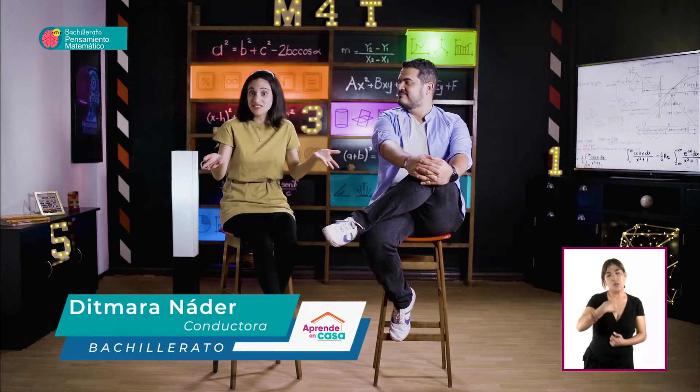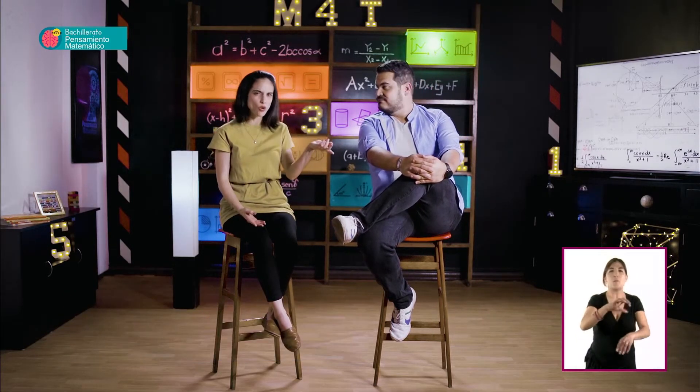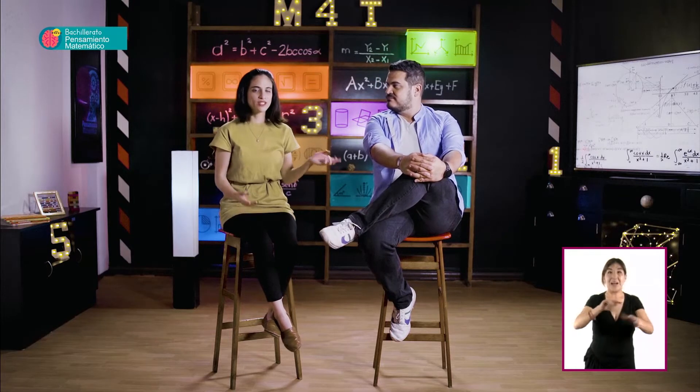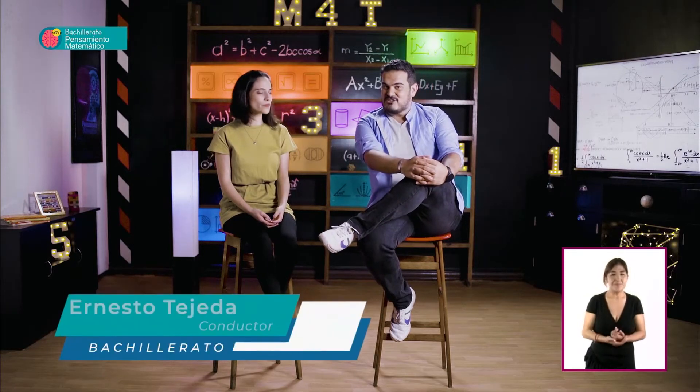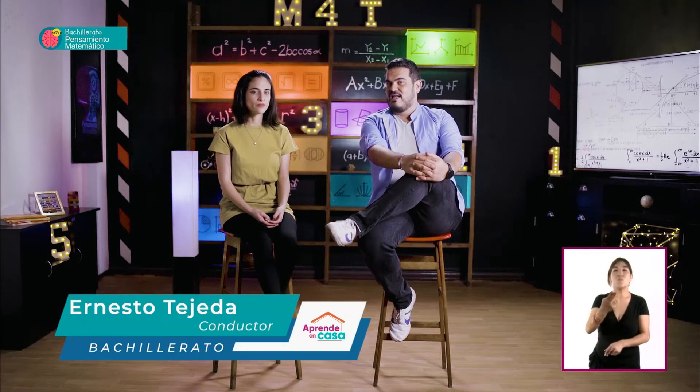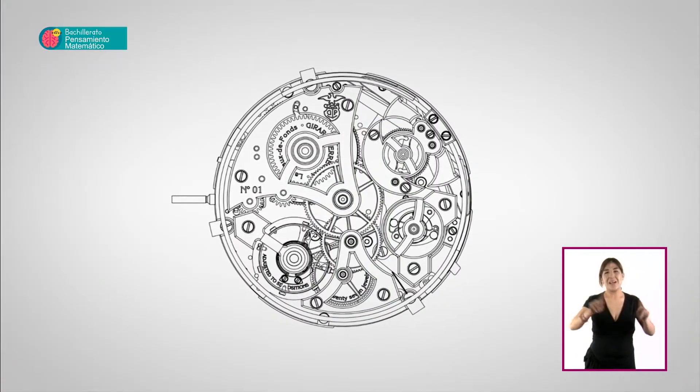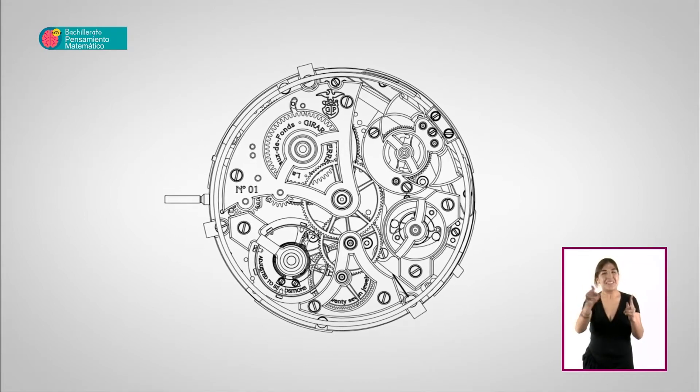Ya hemos visto situaciones en las que un plano representa un objeto más grande que él. ¿Puede existir la situación contraria? Al diseñar un circuito eléctrico o, por ejemplo, al hacer un reloj de pulsera, necesitaríamos de un plano pues cada uno de sus componentes es muy pequeñito en la realidad. En este caso, el uso de la escala es otro: las medidas del plano serán más grandes que la realidad. Vemos que usaremos una escala de ampliación 2 a 1.